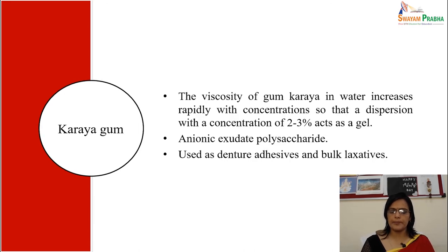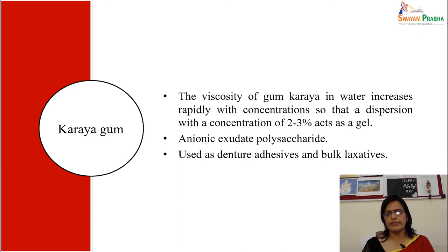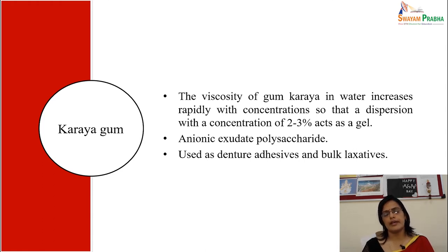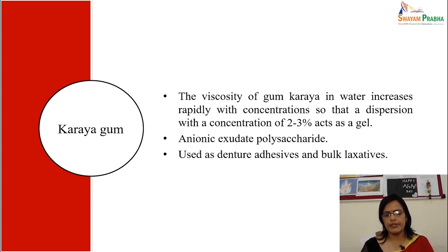Carrageenan: the viscosity of carrageenan in water increases rapidly with concentration, such that a dispersion at 2–3% concentration acts as a gel. It is an anionic exudate polysaccharide used as a denture additive and in bulk laxatives.